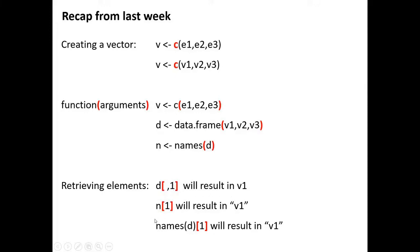You can do the same thing with vectors, but with vectors you don't have to use the comma. You just write the index — the position of the element that you want to retrieve. This will retrieve the first element.